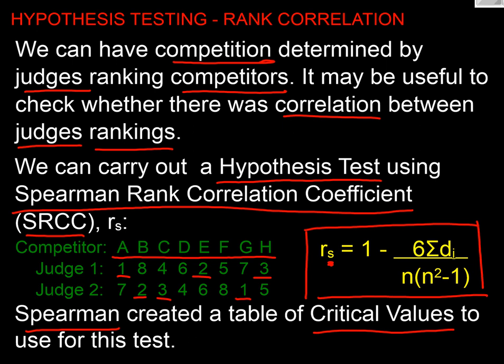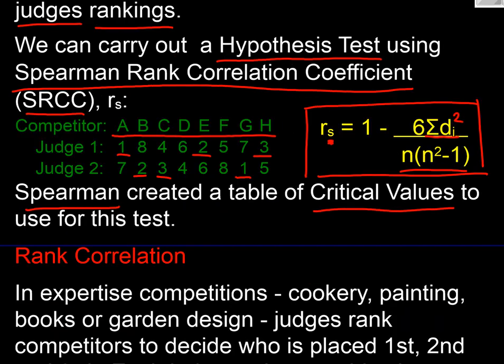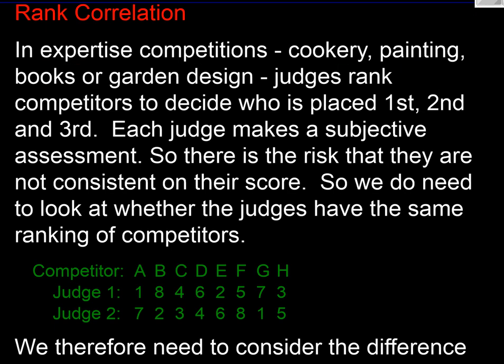To find the correlation coefficient, what we're doing here is we're finding the sum of the differences, or that should be squared, and dividing it by this n over n squared minus 1 to standardize it. So let's have a quick look at an example.